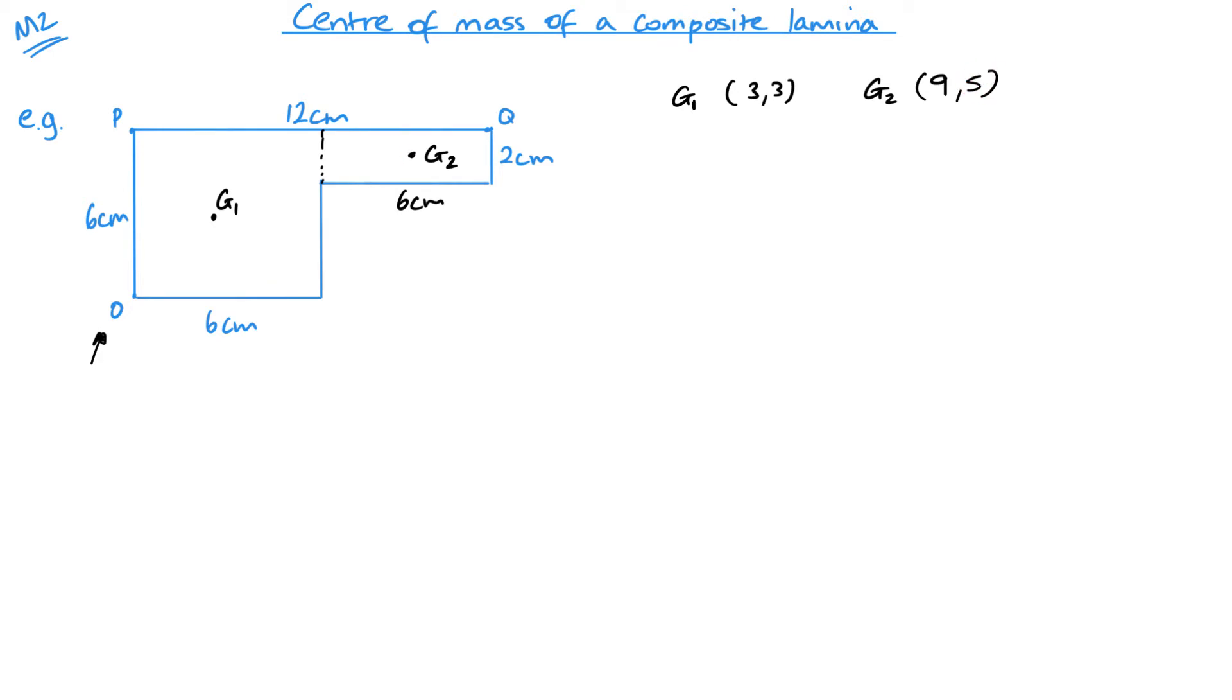Just being clear there. Now, this lamina is a uniform lamina. That means that it's the same area or same mass throughout. Its mass is evenly distributed.